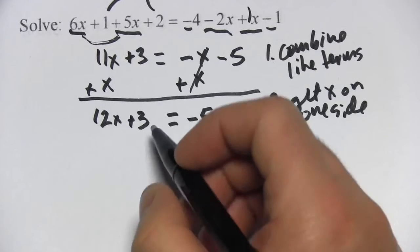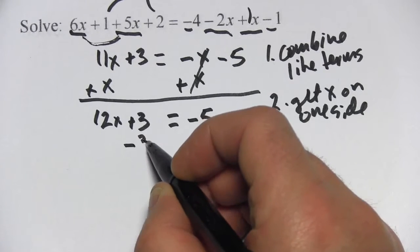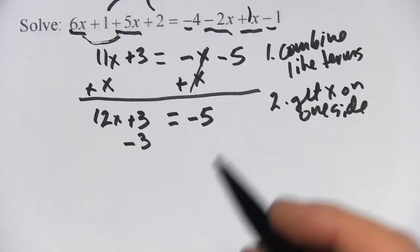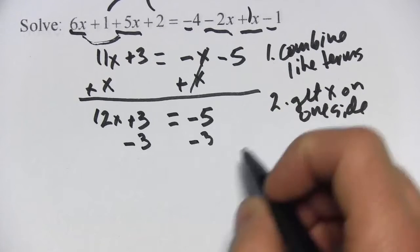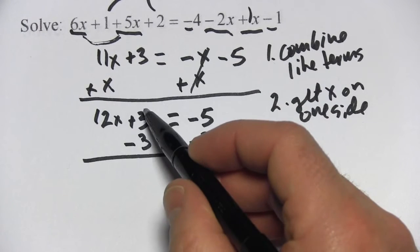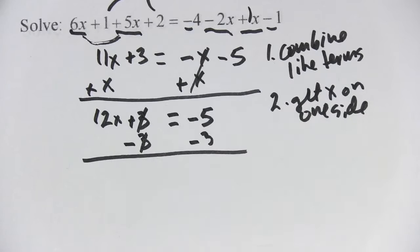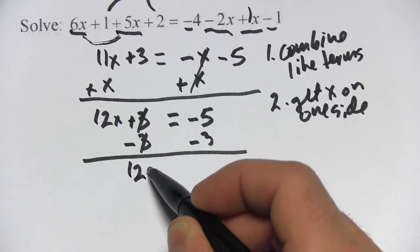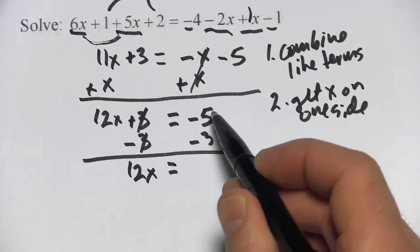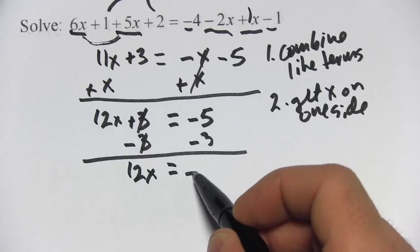It's a positive 3, so I'm going to do the opposite of that. I'm going to subtract 3. If I do it to this side, I have to do it to this side. Over here, positive 3, negative 3, add up to 0. I'm just left with 12x. And over here, a negative 5 and a negative 3 is a negative 8.